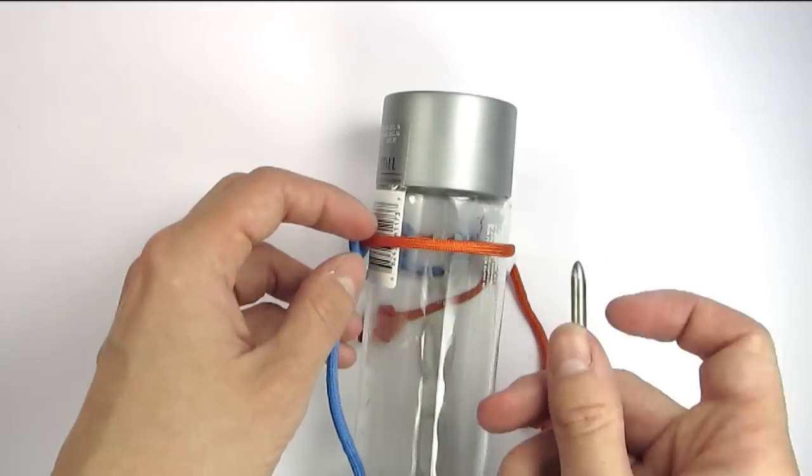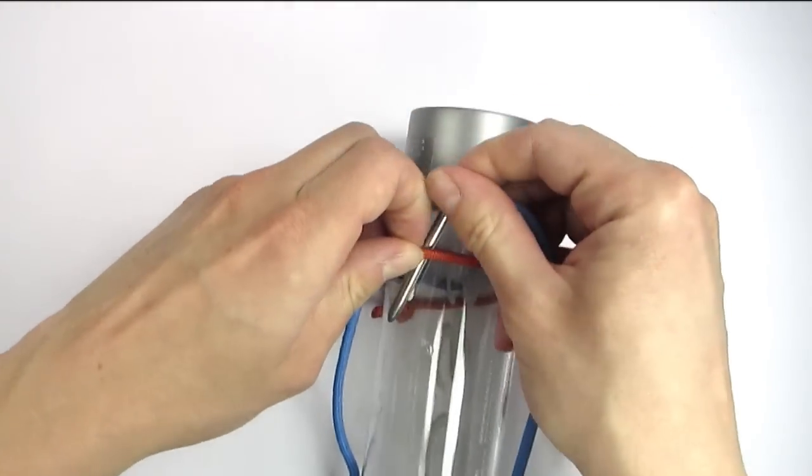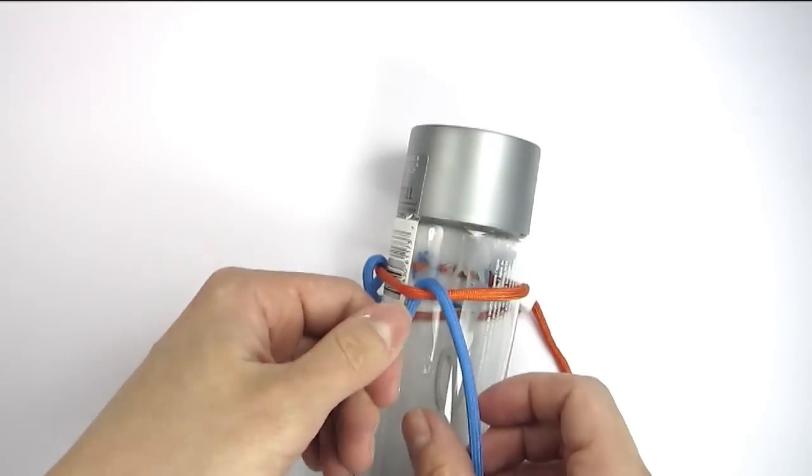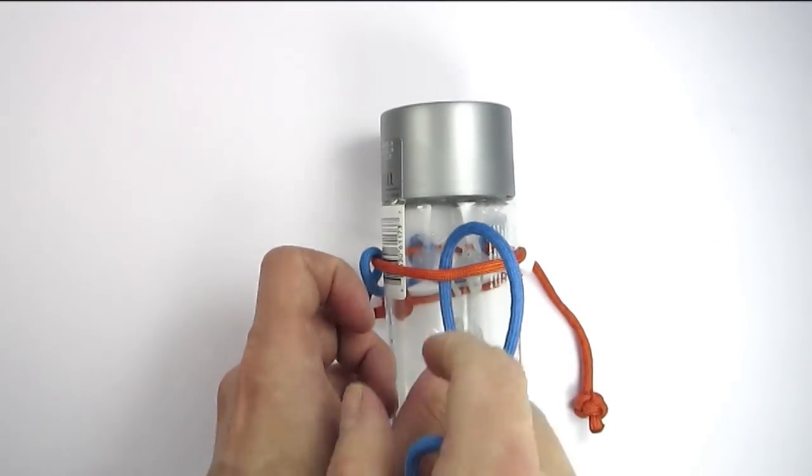You can spread these hitches out as much as you want. And the more you spread them out, the bigger the holes between the hitches will be, which will give it a net-like appearance.